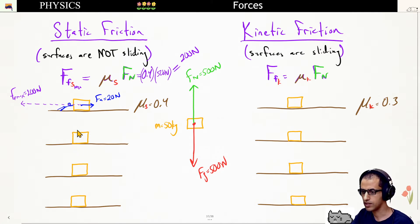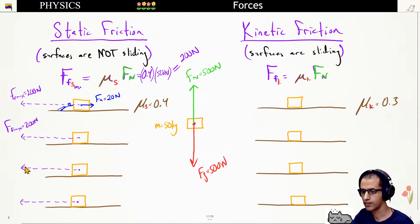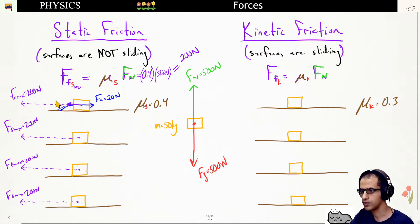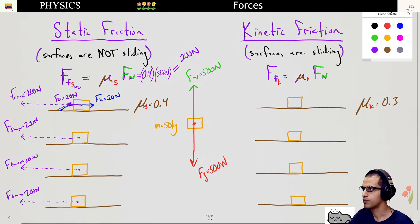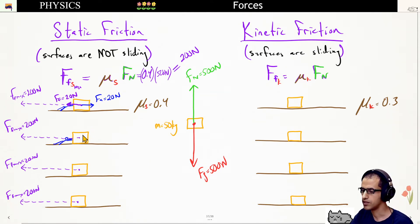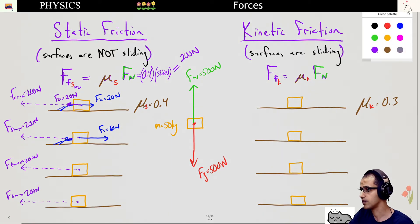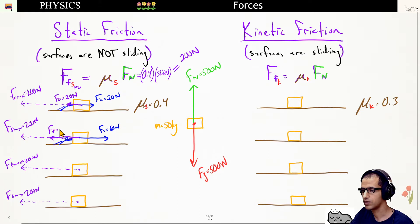In all these examples the box is not sliding. In the first example, the force of friction simply equals the applied force — so with 20 newtons applied, friction is 20 newtons. In most cases we don't use the static friction equation directly; we solve based on context. If the person applies 60 newtons, the box still doesn't slide, so friction balances it at 60 newtons.